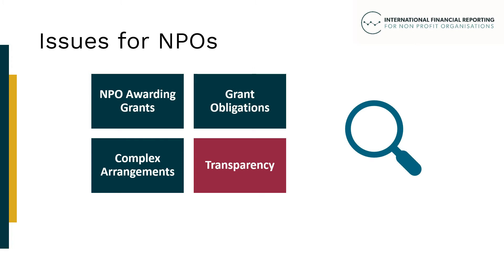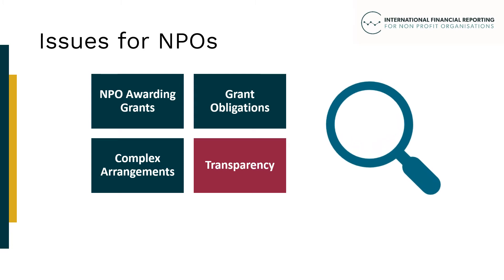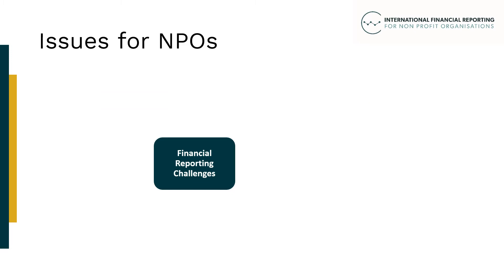Transparency is important to understanding whether an NPO is delivering against its objectives, and also to understanding activities yet to be delivered from existing obligations and commitments. Transparency is important because of the types of arrangements that exist, which may lead to different decisions about when a grantor should recognise all or part of a grant expense. Grant expenses can create challenges for NPOs — there may be a lack of clarity over what has been promised to a grant recipient and what commitments have been created. For example, if an NPO announces that it intends to give a grant, is the announcement sufficient to create an obligation and mean that the NPO needs to recognise the expense?